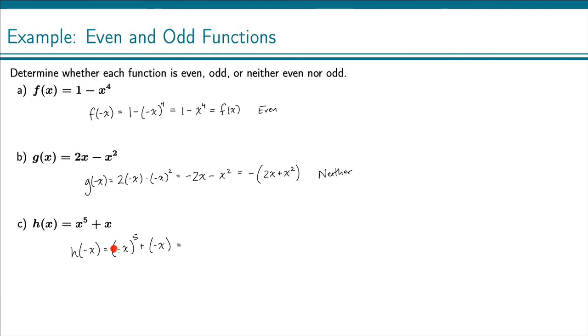To simplify, we have a negative raised to an odd power, and a negative to an odd power is also negative, so this is negative x to the fifth.